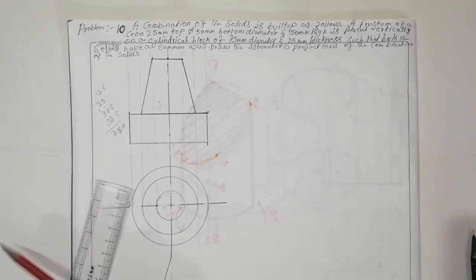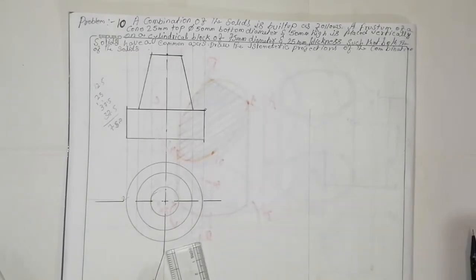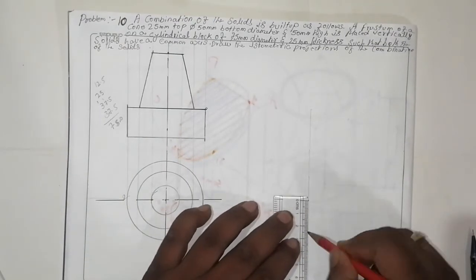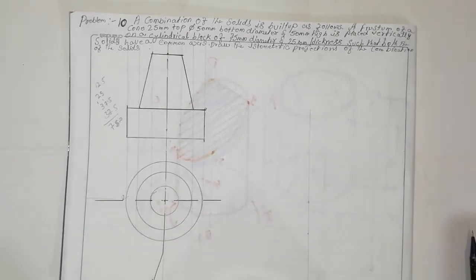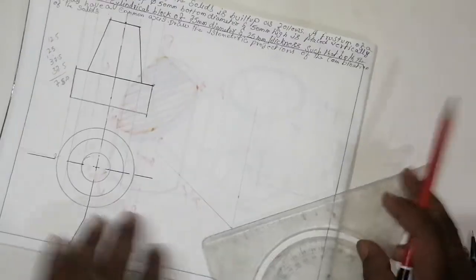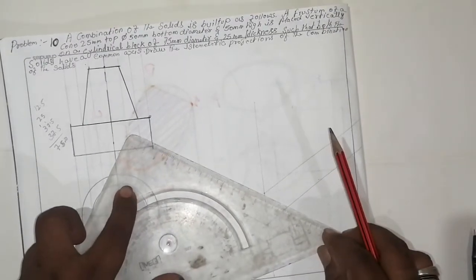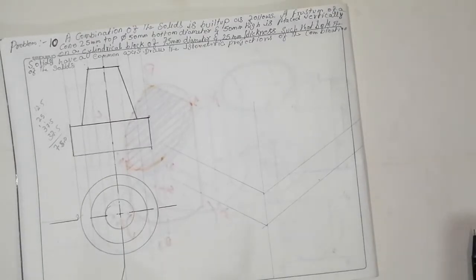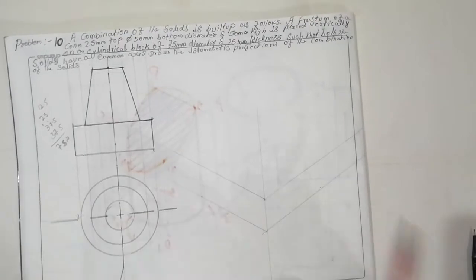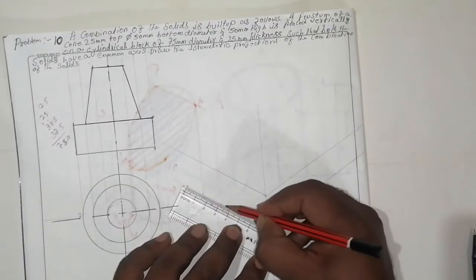We have to take an isometric block like that. Draw a reference line like this. The thickness given is 25mm, so take 25mm here. Using a protractor at 30 degrees, join one reference line like this and one more left front line, so the thickness will come the same. Then join the line like this.